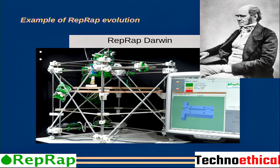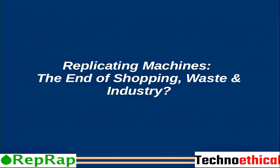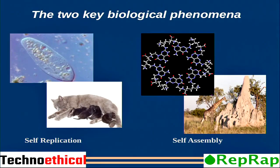This is an example of the evolution of RepRap. This is the first RepRap, Darwin, and this is the Mendel — Mendel was the second one. After that we had the Mendel Prusa. So our replicating machine — the end of shopping, waste, and industry — this is what we hope for.